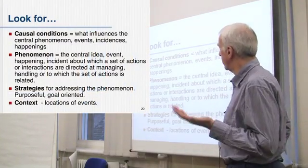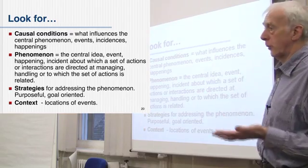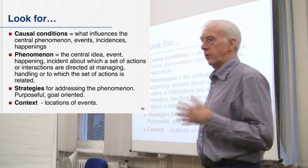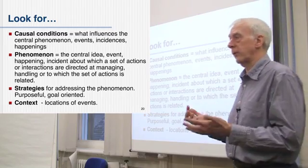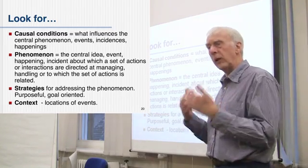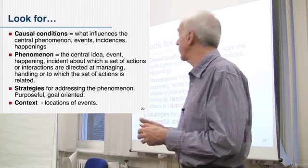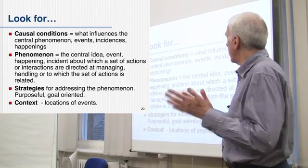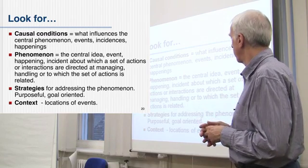So what can you look for? You can look for causal conditions — what influences the central phenomenon? By this stage you're assuming you have a central phenomenon, a few key things you've discovered or want to look at. What influences them? What events, incidences happen that cause them to happen, that bring them about?